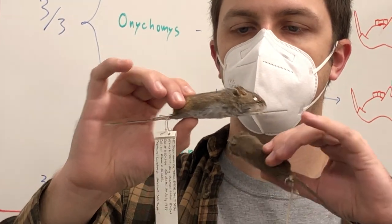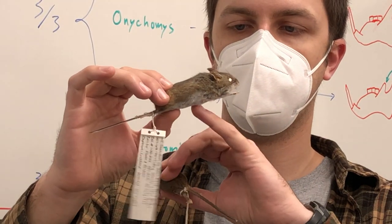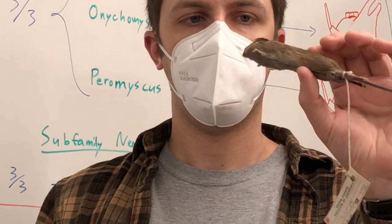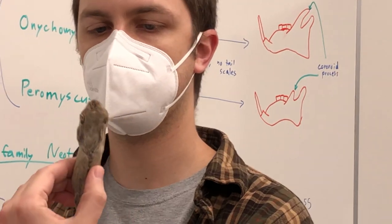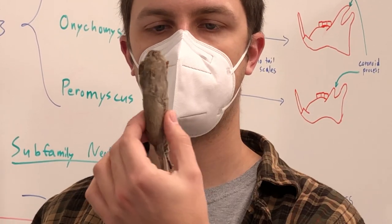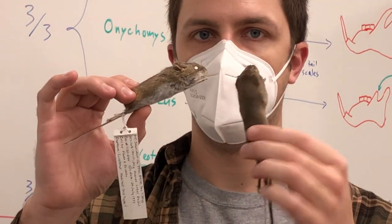We call that countershading, meaning there's a really strong difference between a lighter belly and a darker back. If you look at the house mouse, it is a little lighter on the belly than on the back, but there's not really a strong line and a strong differentiation.